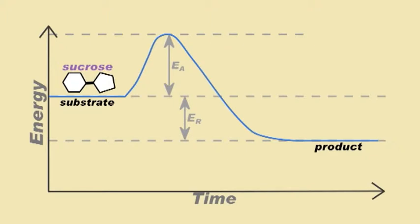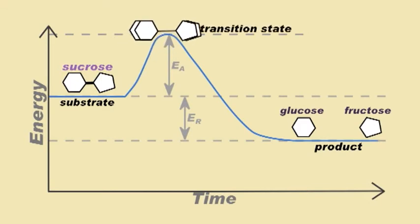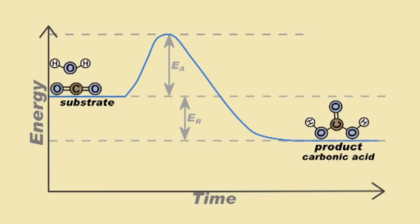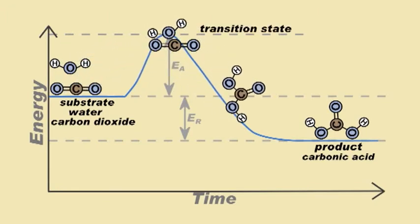For example, to break down the disaccharide sugar sucrose into the monosaccharide sugars fructose and glucose, the glycosidic bond between fructose and glucose must be broken. And to form carbonic acid out of carbon dioxide and water, the oxygen atom of the water molecule must form a bond with the carbon atom of the carbon dioxide molecule.